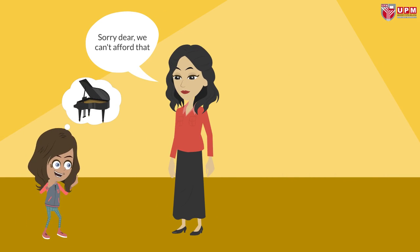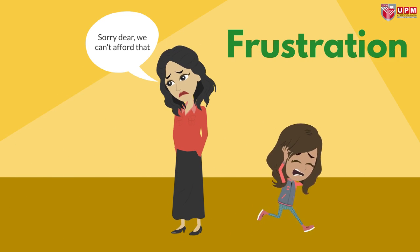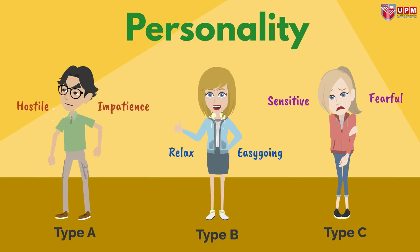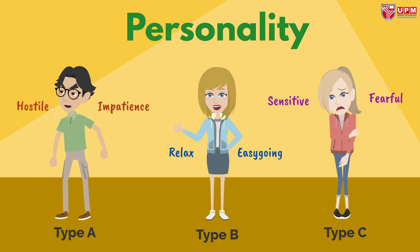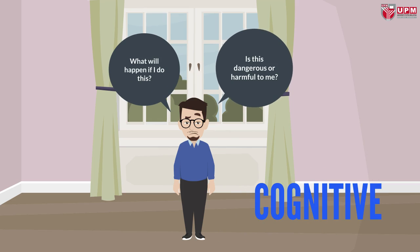Wishes and desires that cannot be reached can cause frustration, which leads to aggressive behavior. There are three types of personality: Type A is impatient and hostile, Type B is relaxed and easy-going, while Type C is a sensitive and fearful person. Personality types A and C are more likely to experience stress. Cognitive appraisal is an individual's interpretation of events in their lives as harmful, threatening or challenging, which leads to overthinking and stress.